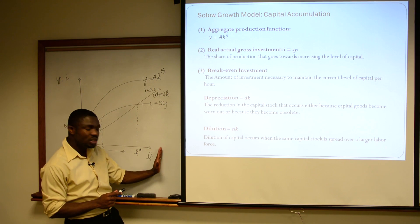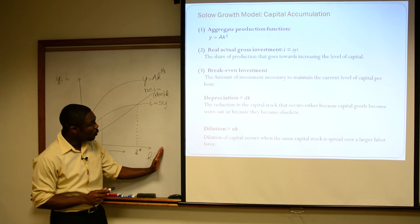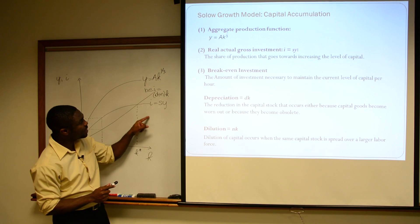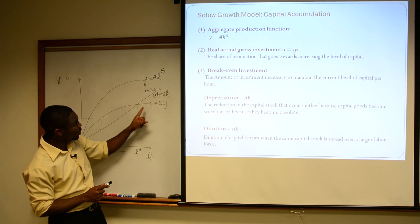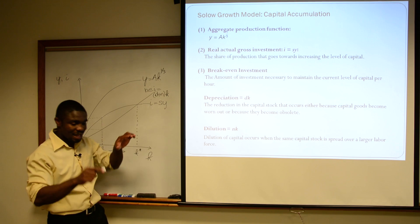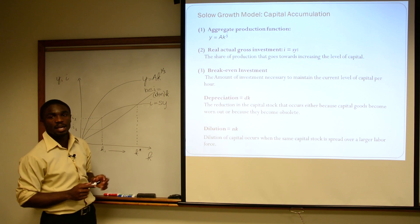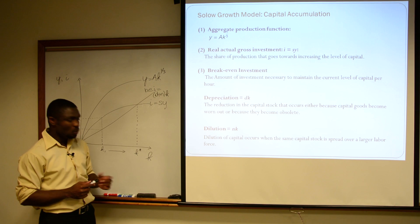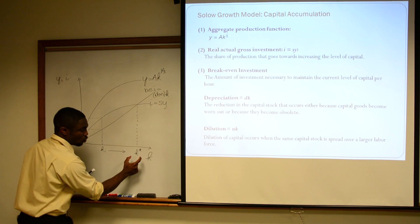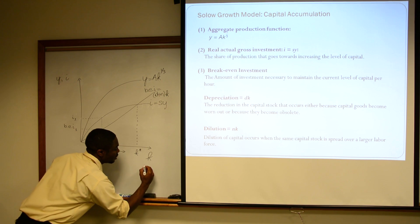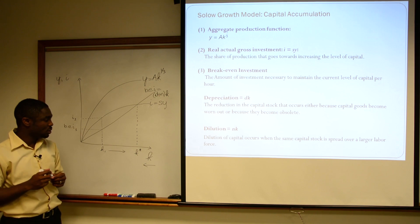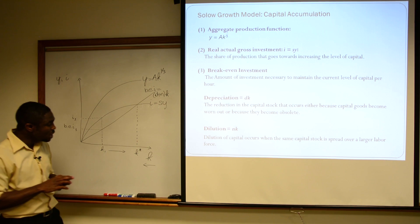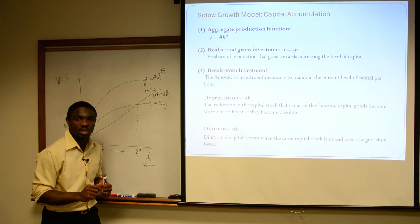If we were to the right of K star, then what we would see is when we trace it up, it hits our actual investment first, saying to us that we're actually investing less than is required to maintain the capital per person — which therefore means, if we're to the right of K star, capital would fall.